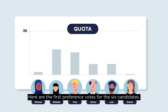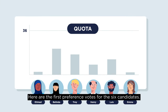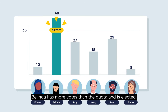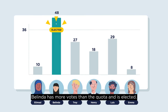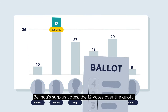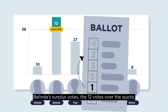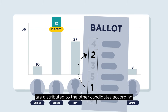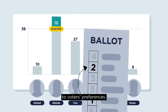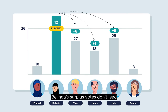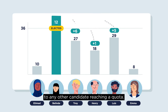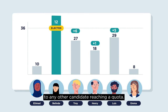Here are the first preference votes for the six candidates. Belinda has more votes than the quota and is elected. Belinda's surplus votes — the 12 votes over the quota — are distributed to the other candidates according to voters' preferences. However, Belinda's surplus votes don't lead to any other candidate reaching a quota.